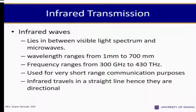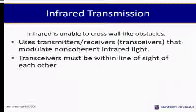Infrared waves lie between the visible light spectrum and microwaves, with wavelengths ranging from 1 mm to 700 nm and frequencies from 300 GHz to 430 THz. They are used for very short range communication purposes. Infrared travels in a straight line and is directional; it is unable to cross solid obstacles. Infrared uses transmitters and receivers — transceivers that modulate non-coherent infrared light — and transceivers must be within line of sight of each other.